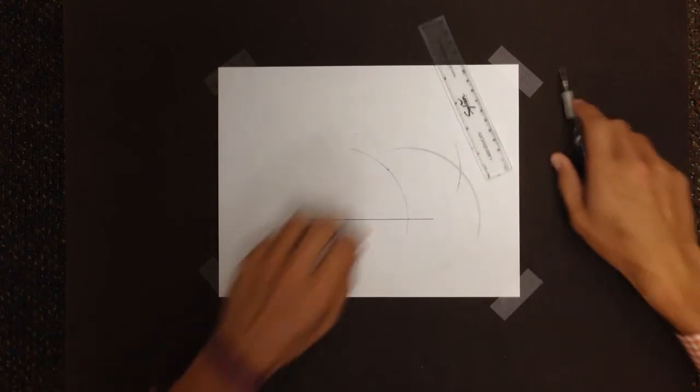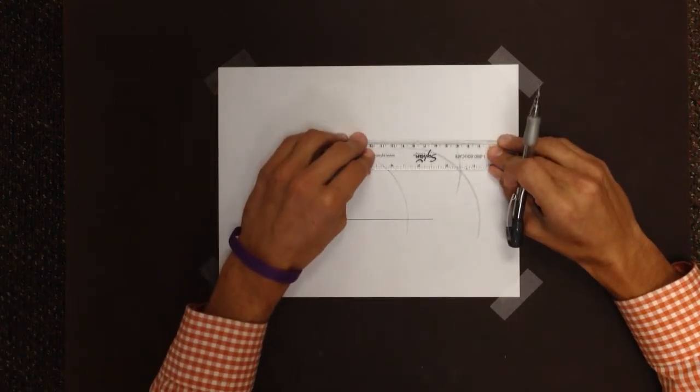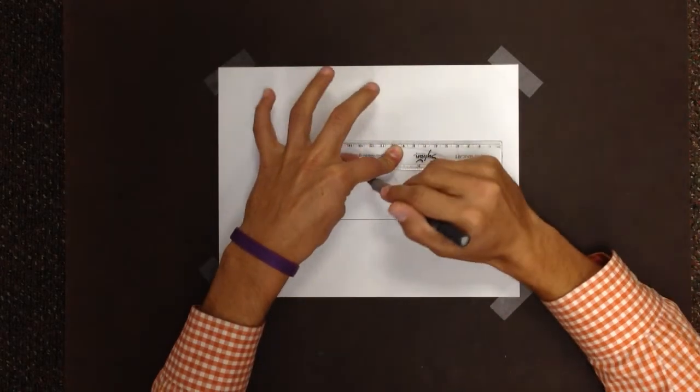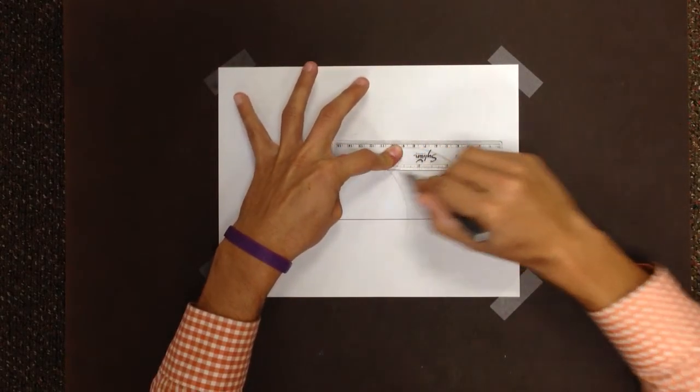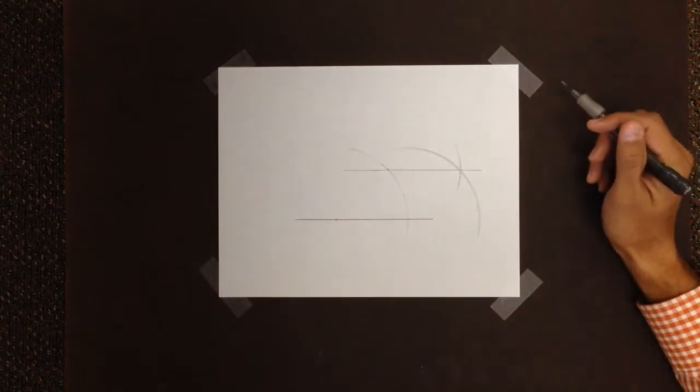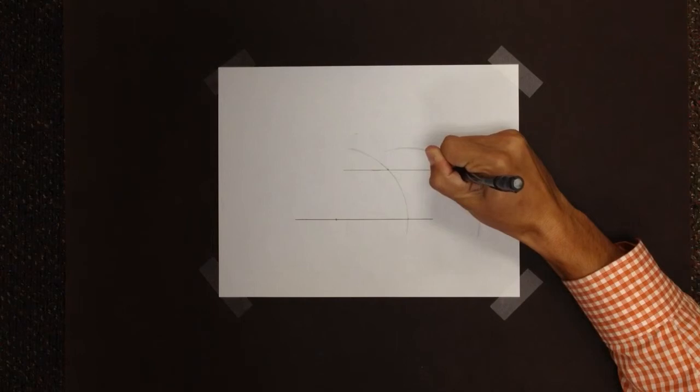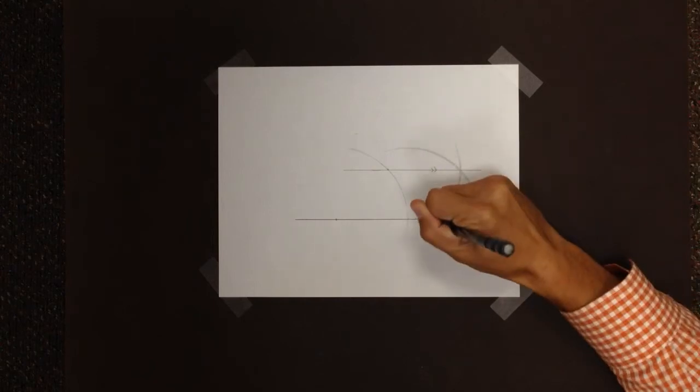So if I were to draw a line from where my point is, to where those two arcs intersect, it gives me two lines that are parallel.